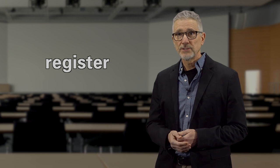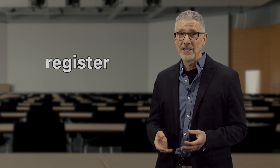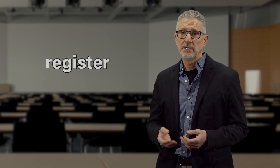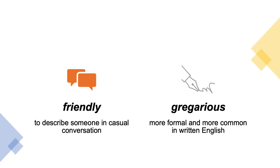Another aspect of word meaning is register. Register has to do with the typical contexts — the social context, the usage context — of particular words. For example, we have two words, 'friendly' and 'gregarious', which are very similar in meaning but used in different contexts. We can use 'friendly' in casual conversation, but 'gregarious' is more formal and more common in written English, so it might sound weird to use it in casual conversation.